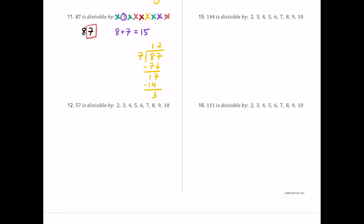For number 12, we have 57. It's an odd number so 2, 4, and 8 fail. Since 2 fails, 6 and 10 also fail — all odd numbers won't work for any of these even-based rules. The sum 5 plus 7 is 12, a multiple of 3 but not 9. The last digit is 7, not 5 or 0, so 5 fails. For 7: 7 times 8 is 56, which leaves a remainder, so 7 fails. Only 3 works for 57.